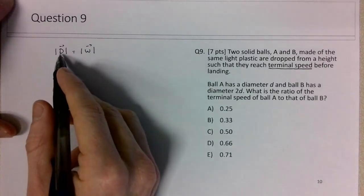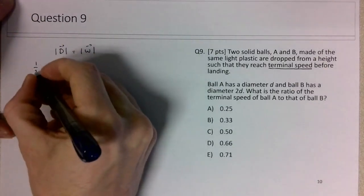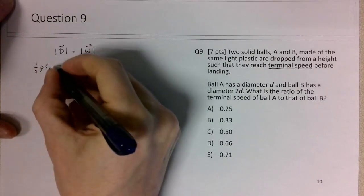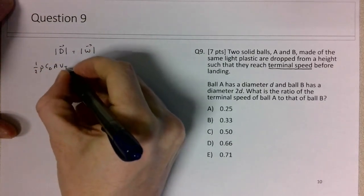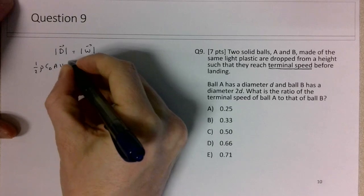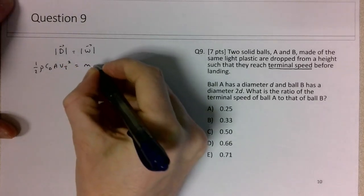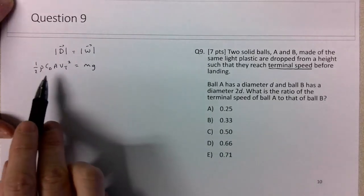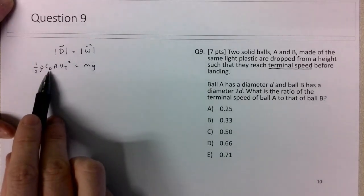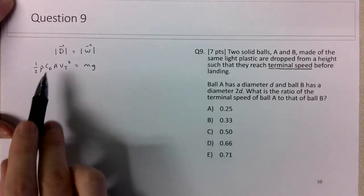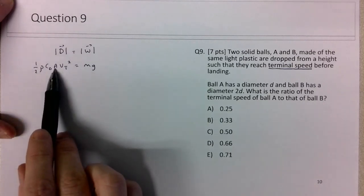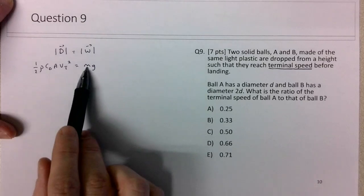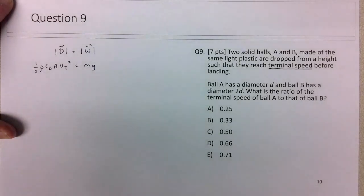The drag equation at high Reynolds number is 1/2 ρ cd A vt² equals mg, where ρ is the density of the fluid, cd is the drag coefficient, A is the cross-sectional area, vt is the terminal speed, m is the mass, and g is the acceleration due to gravity.